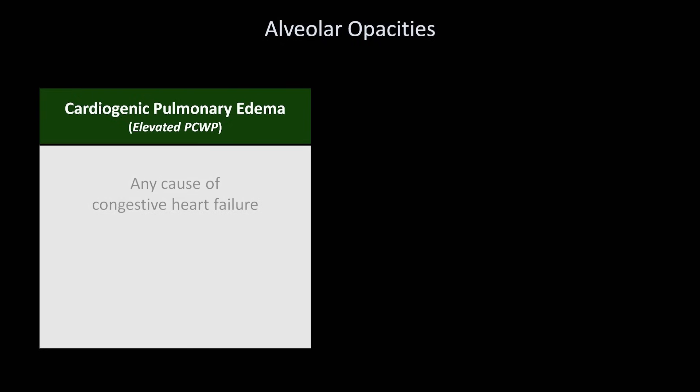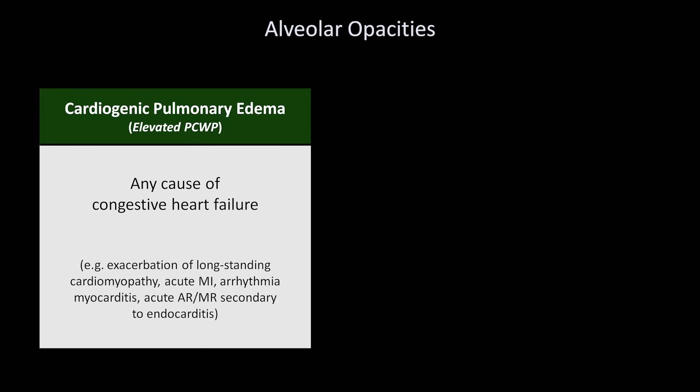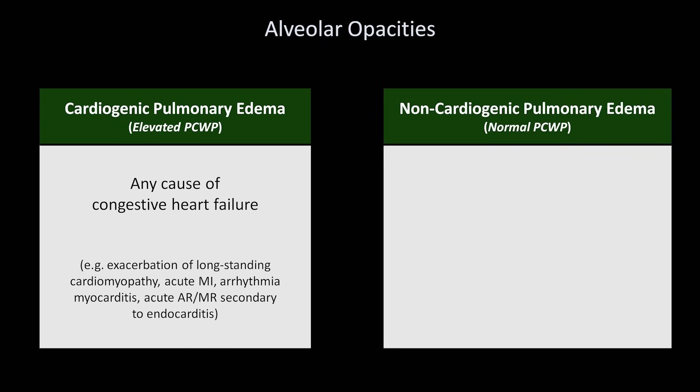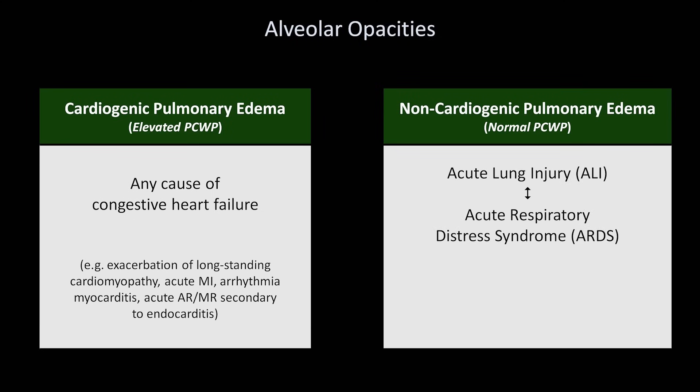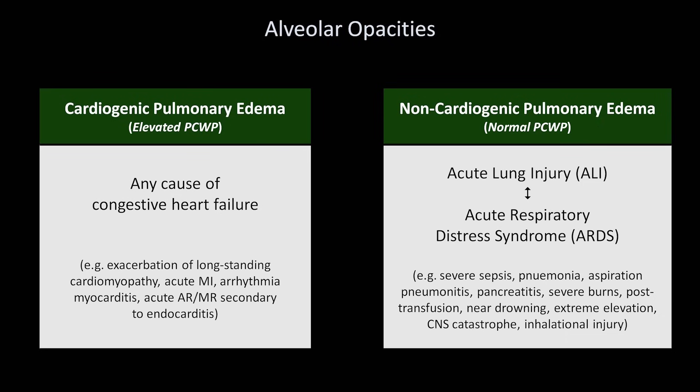Cardiogenic pulmonary edema can be seen in any cause of congestive heart failure, including exacerbations of long-standing cardiomyopathy, acute MI, arrhythmia, myocarditis, or acute aortic or mitral regurgitation secondary to endocarditis. Then there is non-cardiogenic pulmonary edema, in which the wedge pressure is normal. The clinical correlate to diffuse non-cardiogenic pulmonary edema is the spectrum between acute lung injury and acute respiratory distress syndrome. ALI and ARDS can be caused by severe sepsis, pneumonia including viral pneumonia from influenza, aspiration pneumonitis, pancreatitis, severe burns, post-transfusion reaction, near drowning, extreme elevation, CNS catastrophe, and inhalational injury.